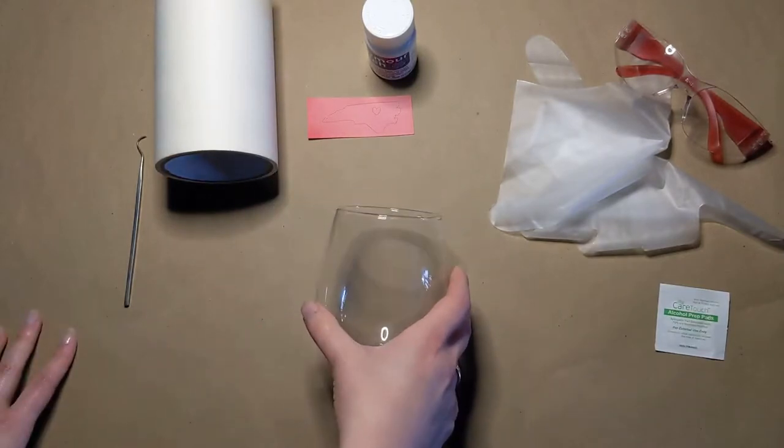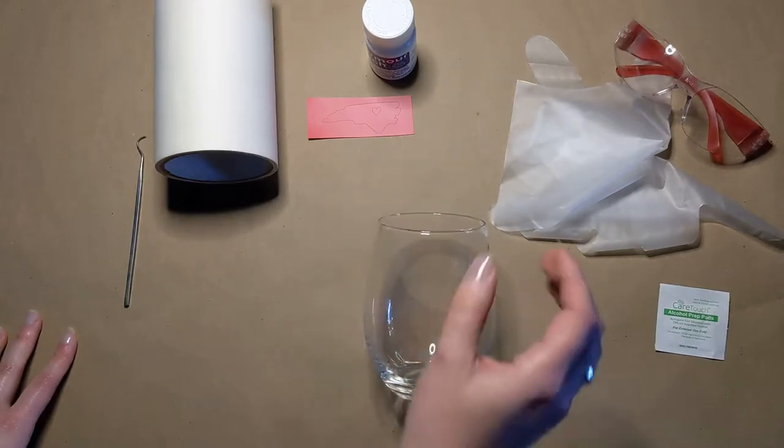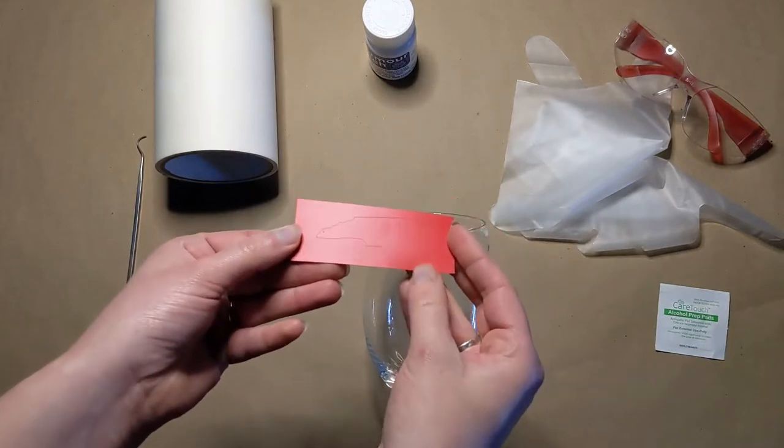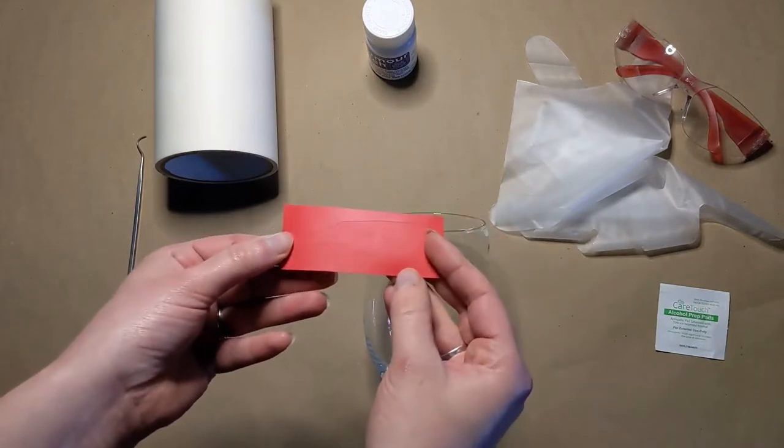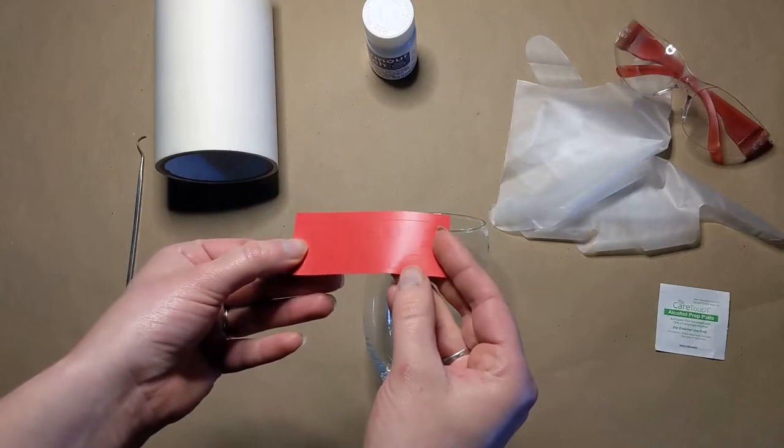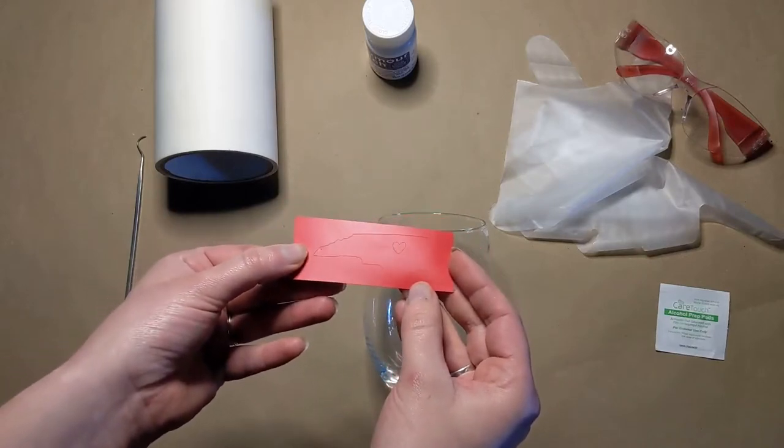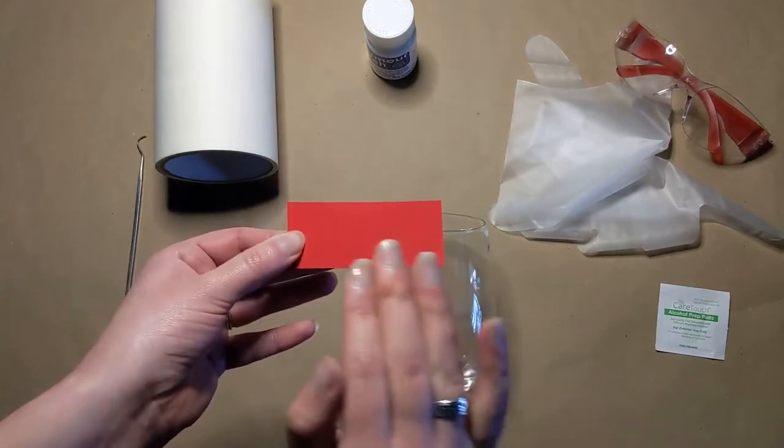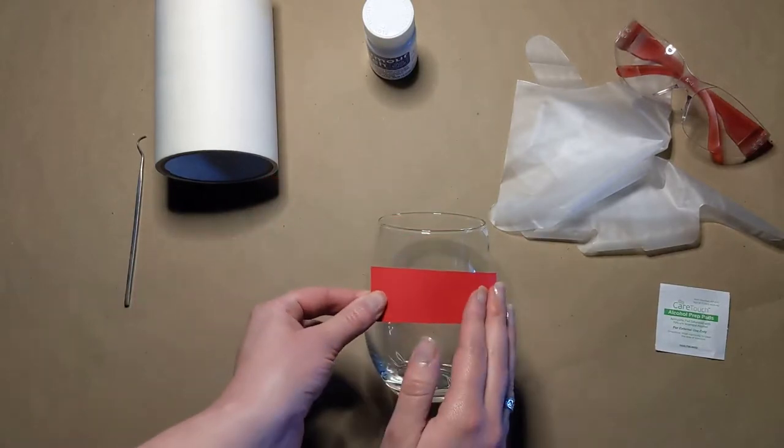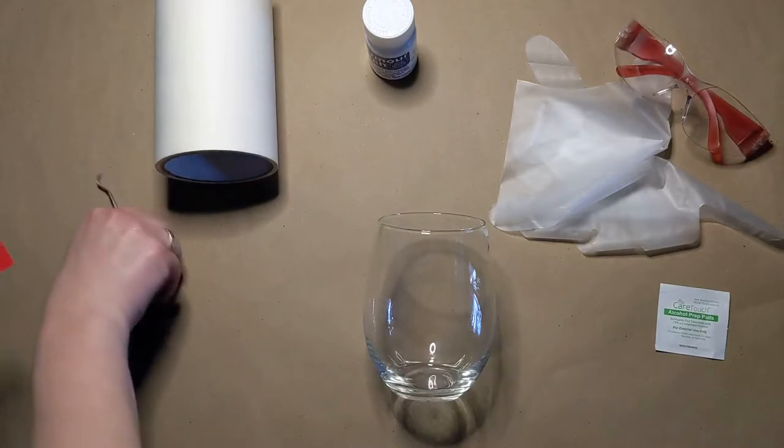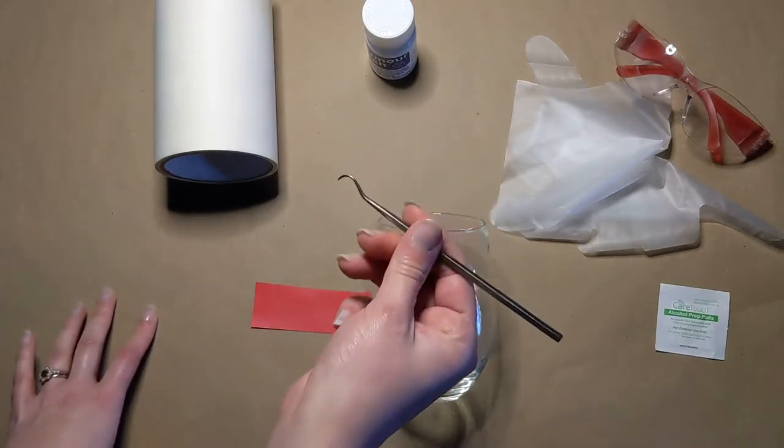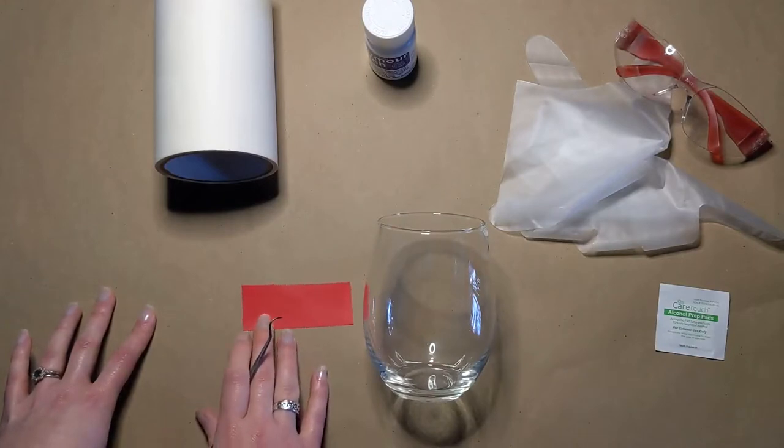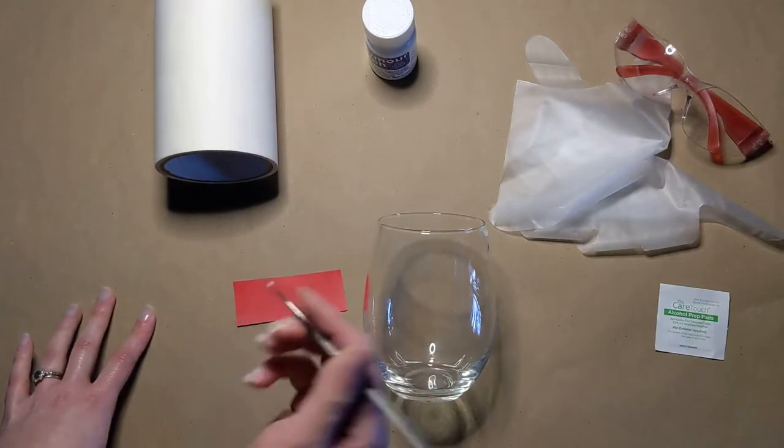When we start off with glass etching, the first thing we want to do is weed our stencil. Pretty much what weeding entails: it means taking out the inside of the stencil or taking out the parts that you don't want, so that all we see is the part that is going to end up etched on the glass. Go ahead and use our weeding tool. This is not as necessary for this particular stencil because we're not doing a whole lot of detail work, but these tools really come in handy when you're trying to take out small letters and things like that.